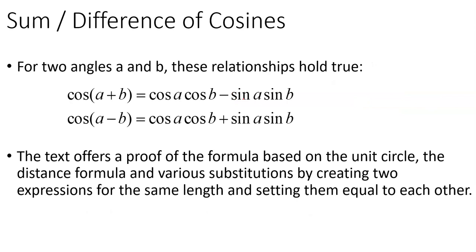We need a formula that allows us to take the sum inside a cosine. We have one: the cosine of two angles added together is cosine A cosine B minus sine A sine B. So cosine of A plus B equals cosine cosine minus sine sine. It works in reverse: cosine of A minus B is cosine cosine plus sine sine.